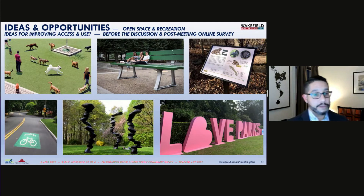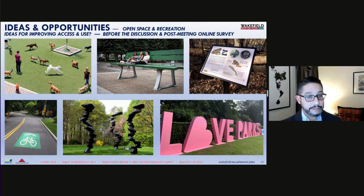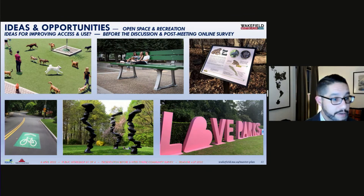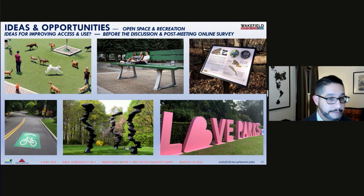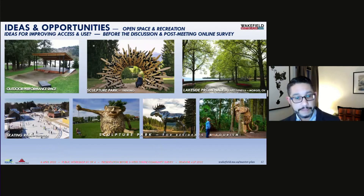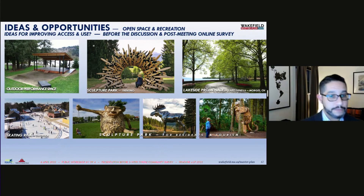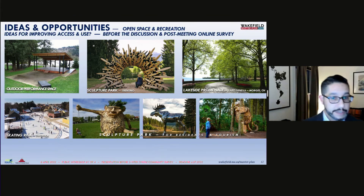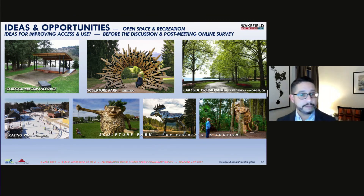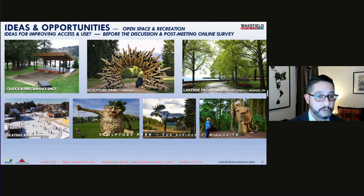Here are a few photo examples of possible ideas for parks and recreational amenities, including dog parks, sculptures in parks, and interpretive nature signage for wildlife. Additional ideas for inspiration include outdoor performance spaces, a lakeside promenade, an outdoor skating rink, and oversized whimsical sculptures — including a troll sculpture made out of recycled wood with a swing for kids.